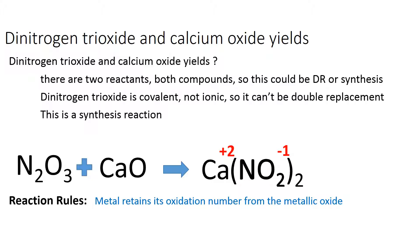So the answer to our question: dinitrogen trioxide and calcium oxide yields calcium nitrite.